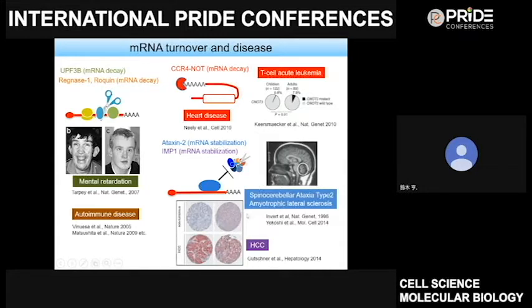In neurodegenerative diseases, ATAXIN-2 loses its ability of stabilizing target mRNA due to elongation of polyglutamine repeat. In hepatocellular carcinoma, excess amount of the mRNA binding protein IMP1, a stabilizing molecule, is produced, resulting in stabilization and overexpression of many tumor-related gene products. Therefore, regulation of mRNA stability is of vital importance in tissue homeostasis.